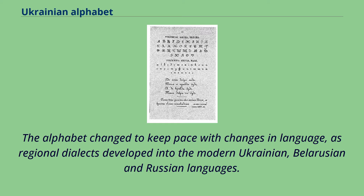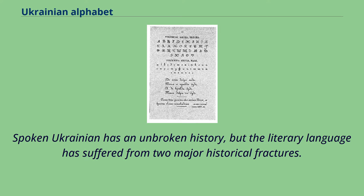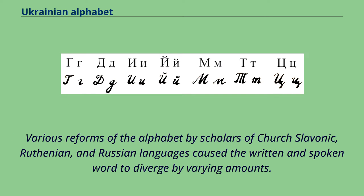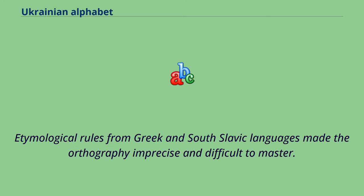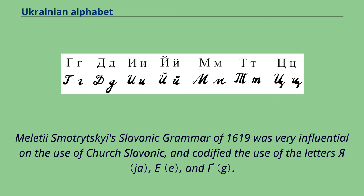Spoken Ukrainian has an unbroken history, but the literary language has suffered from two major historical fractures. Various reforms of the alphabet by scholars of Church Slavonic, Ruthenian, and Russian languages caused the written and spoken word to diverge by varying amounts. Etymological rules from Greek and South Slavic languages made the orthography imprecise and difficult to master.